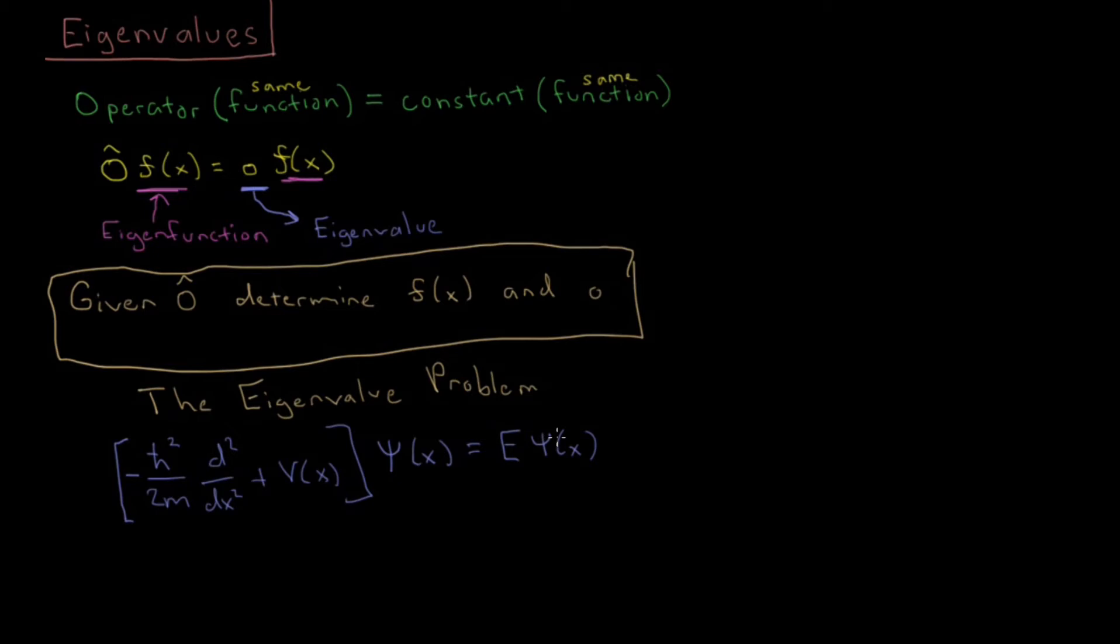So, you'll notice here, what we've got is this whole thing is an operator. This is multiplication, this is differentiation, multiplication. All of this acts on the wave function, and the result is a constant, the energy, times the wave function again. So, this is an example of an eigenvalue problem.